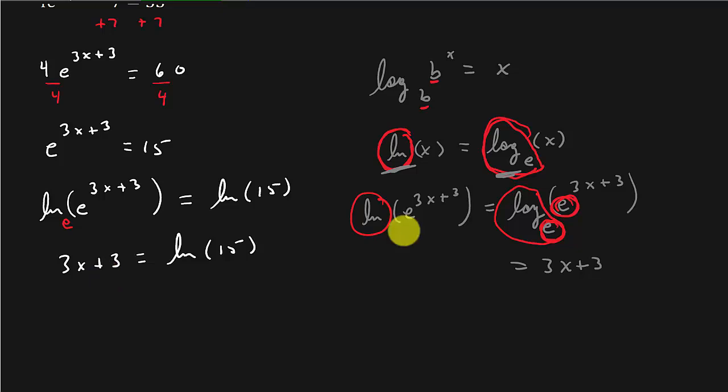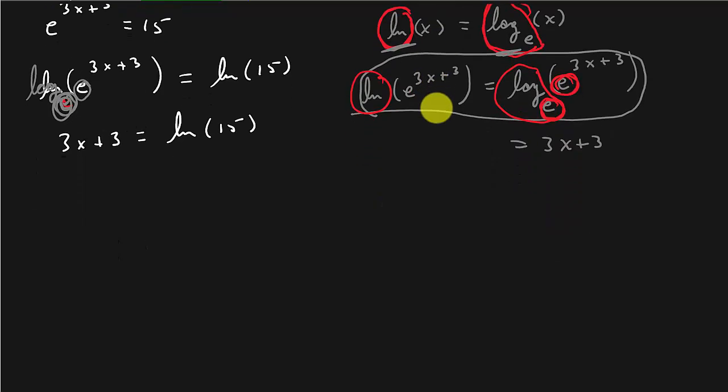You don't need to come out and write this out every time. You've just got to look at this. When you see ln, picture this e right here. And since that e and that e is the same, I mean, that's not really an e there. You're picturing this as log base e. ln is log base e. And since this e and this e are the same, then your answer is your exponent. So that's where that's coming from.